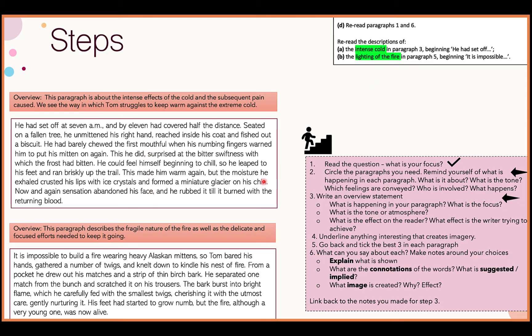My overview for paragraph five is: 'The paragraph describes the fragile nature of the fire, as well as the delicate and focused efforts needed to keep it going.' Notice the language I've used — fragile, delicate — which is very different from paragraph three where I've used intense, extreme, and pain. You can actually see that the tone is very different across these two paragraphs, and that will be helpful when writing up my answer.